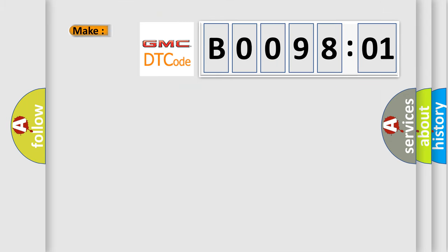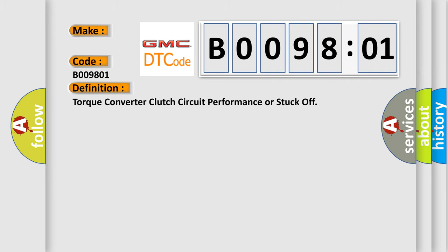So, what does the diagnostic trouble code B009801 interpret specifically for GMC car manufacturers? The basic definition is: torque converter clutch circuit performance or stuck off.